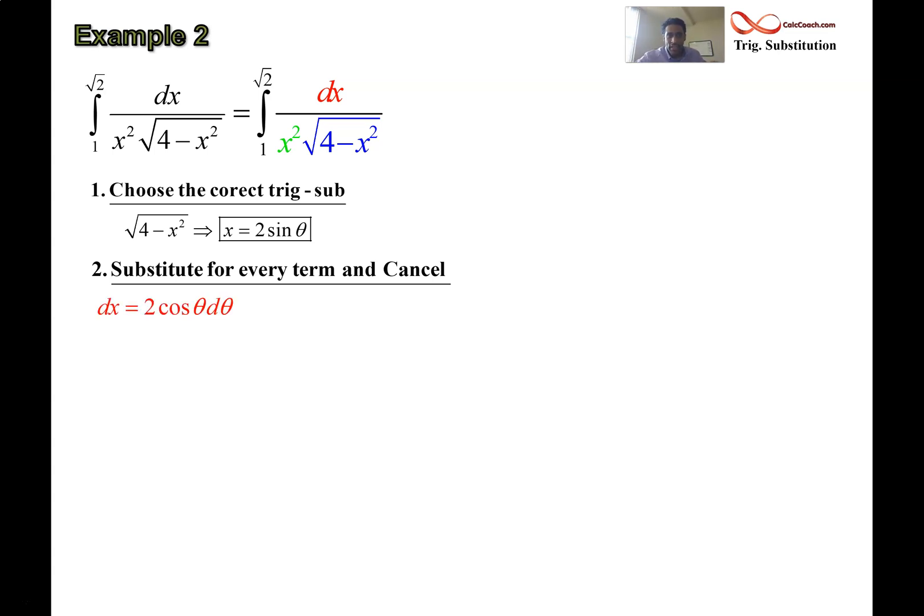What does dx get replaced by? Just take the derivative. Like when you do u substitution, you take the derivative to figure out how to replace dx. In this case, we take the derivative, and dx gets replaced by 2 cosine theta d theta, derivative of 2 sine theta. Next up, we have x squared. Well, go back to x and square it. Square the 2 and square the sine, and you'll have 4 sine squared theta. That's going to be the replacement for x squared.